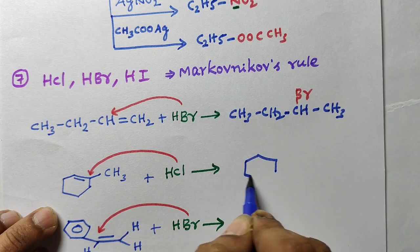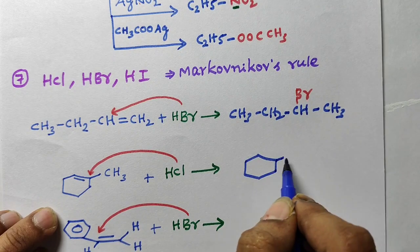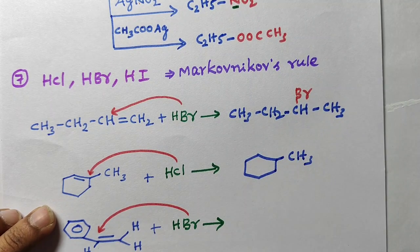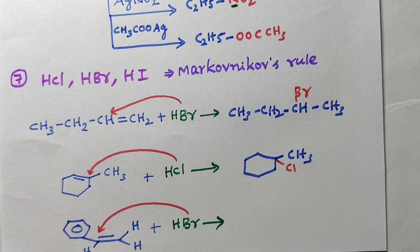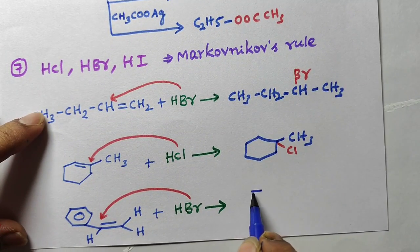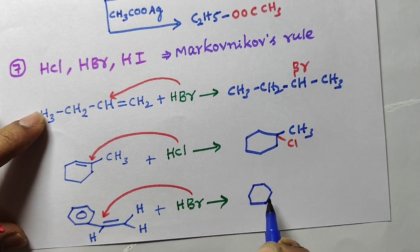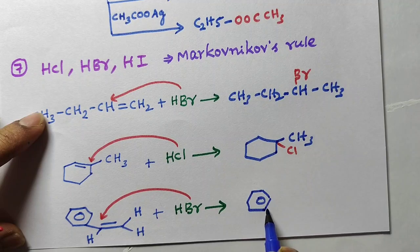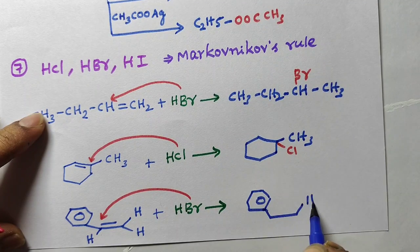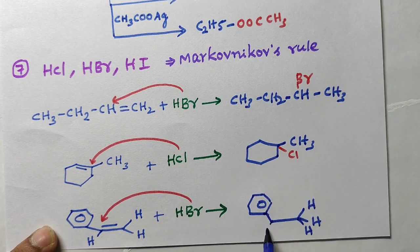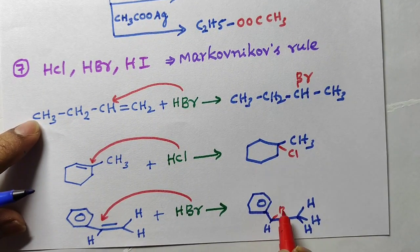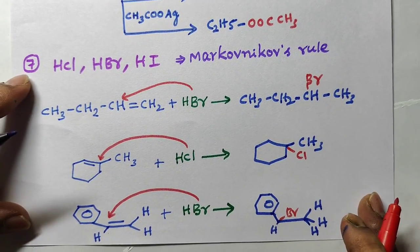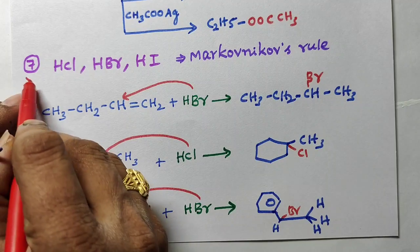Another example: CH3CH=CHCH3 — here Cl⁻ will attack at the less hydrogen-containing double-bonded carbon. Compare the hydrogens on each double-bonded carbon; bromine attacks where there is less hydrogen. This is Markovnikov's rule, which is very very important.